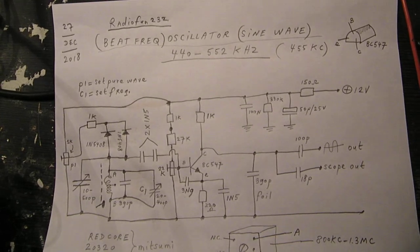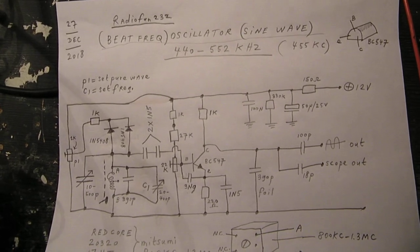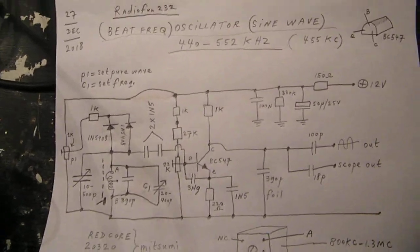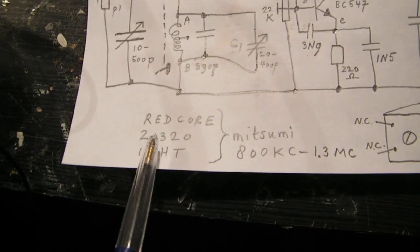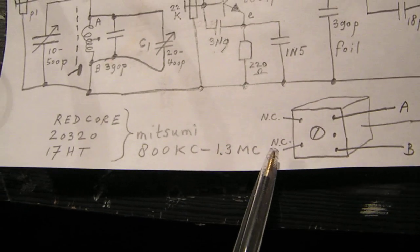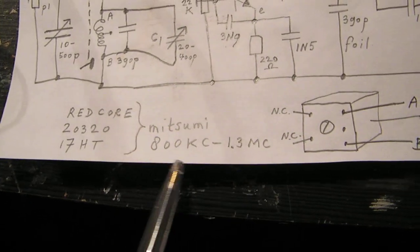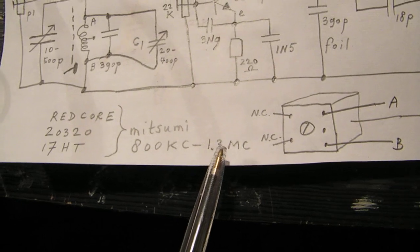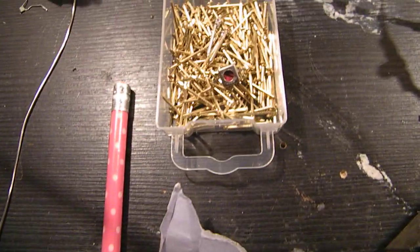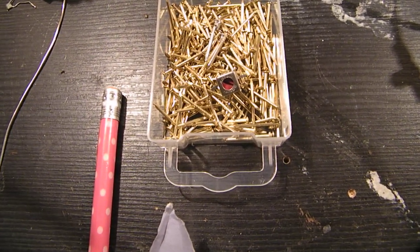Beat Frequency Oscillator, you can set the waveform. I made it with a Mitsumi transformer made for medium waves, 800 kilohertz up to 1.3 megahertz. It has a red core, and this is the type number 2032017ht.